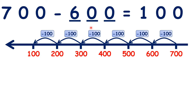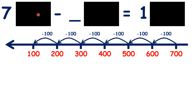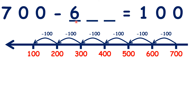But without using a number line we might still be able to answer this, because both numbers in the question are multiples of a hundred. If we ignore our tens and units, we have 7 minus something equals 1. You can easily work out that 7 minus 6 is 1, but we don't want to just write 6, because 700 minus 6 is 694, not 100. So we need to show that this 6 stands for six hundreds, meaning we need zeros in our tens and units columns.